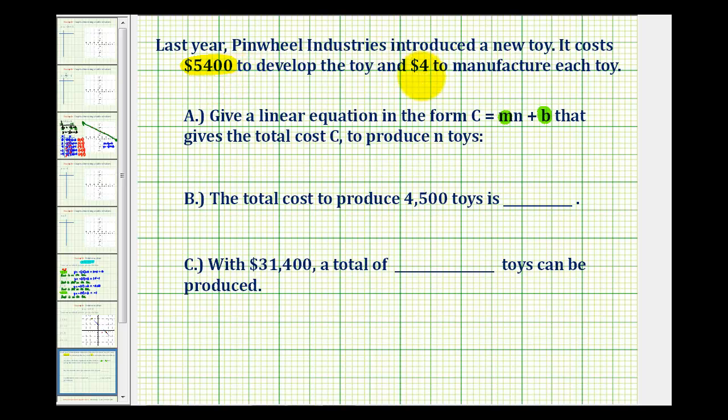If we produce one toy, it's going to be $5,400 plus 1 times 4. If they produce two toys, it's going to be $5,400 plus 2 times 4 and so on.